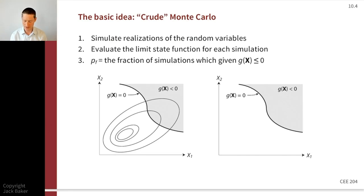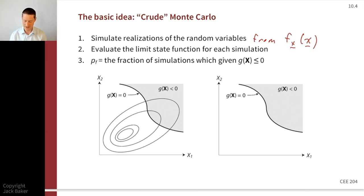Step one: we simulate realizations of the random variables from our target distribution — the joint PDF of x. Step two: we evaluate the limit state function for each simulation. Step three: we count how many of those simulations gave us an outcome where the limit state function indicated failure. To think about that with the figure below, the bottom-left figure shows a couple of random variables, contours of the probability density function, the limit state function, and the failure domain in gray.